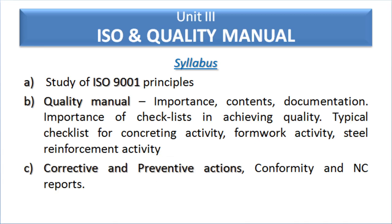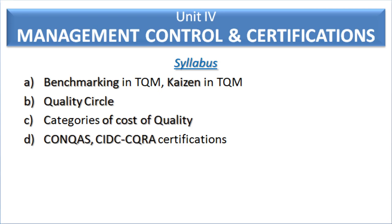Unit number three is ISO and its quality manual. This unit comprises various ISO 9001 principles, then the quality manual of ISO 9001, and the last part covers corrective and preventive actions, and also confirmative and non-confirmative reports as per ISO.